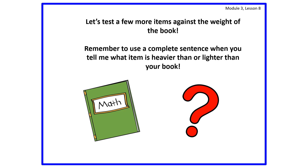Let's test a few more items against the weight of the book. Use a complete sentence when you tell me what is heavier than or lighter than your book. We don't have to have our book — we can use something else: a remote control, a blanket, a picture, or anything in our household so that we can compare weights. I would like for you to find five different things to compare their weight, and tell your mom, your dad, your uncle, your aunt, or your puppy in a complete sentence which is heavier than the other and which is lighter than the other.